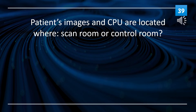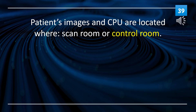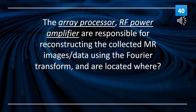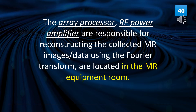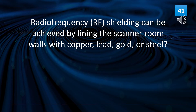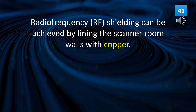The patient's images and CPU are located in the control room. The array processor and RF power amplifier are responsible for reconstructing the collected MR image data using the Fourier transform, and are located in the MRI equipment room. Radio frequency (RF) shielding can be achieved by lining the scanner room walls with copper.